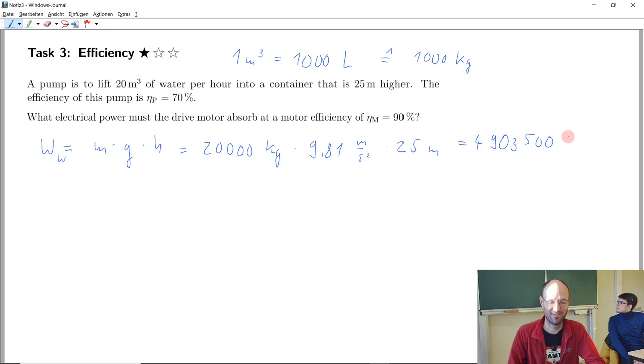I will write down the unit at first, so this is kilogram, we have meter and we have another meter, so we have meter squared and we have second squared. Kilogram times meter divided by second square is the same as Newton. So this is one Newton, and if we have one Newton meter, this is the same as Joule. So we can also skip all the stuff here and say this is Joule.